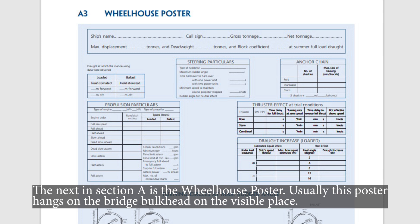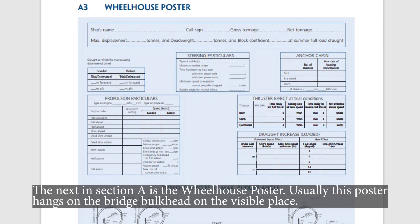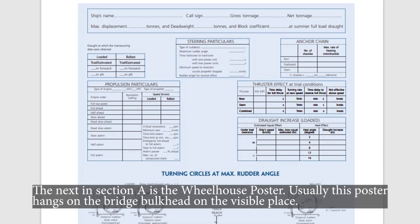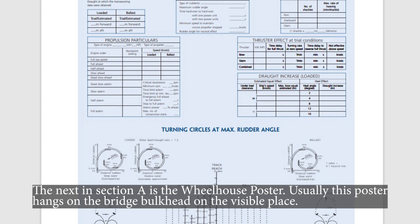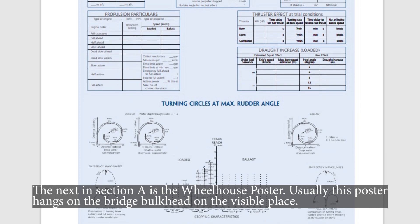The next item in section A is the wheelhouse poster. Usually this poster hangs on the bridge bulkhead in a visible place.